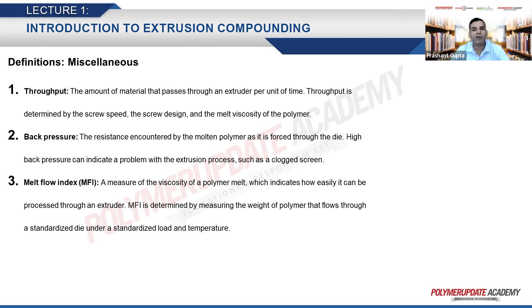Throughput is the amount of material that passes through an extruder per unit of time. It is determined by the screw speed, the screw design, and the melt viscosity of the polymer.